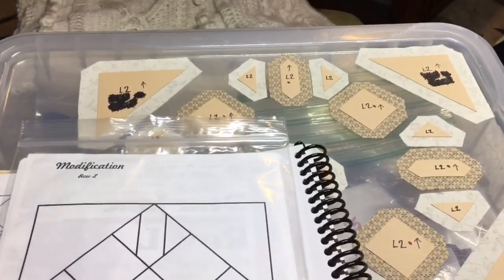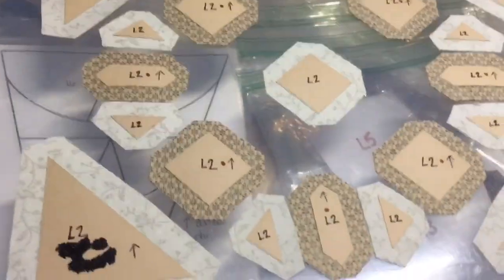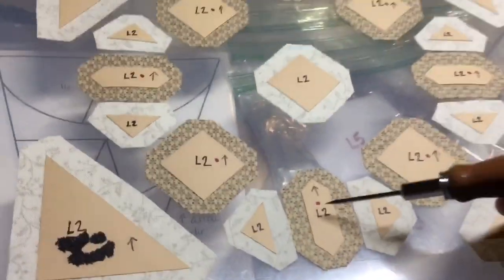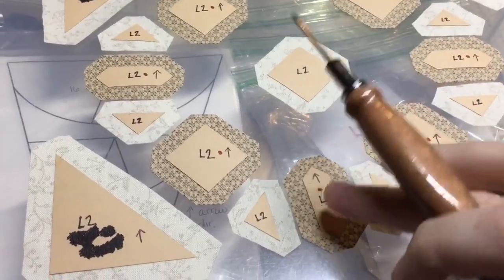I have my pieces laid out on my box. So from a basting standpoint I am going to baste the long sides first on these little double arrow pieces.